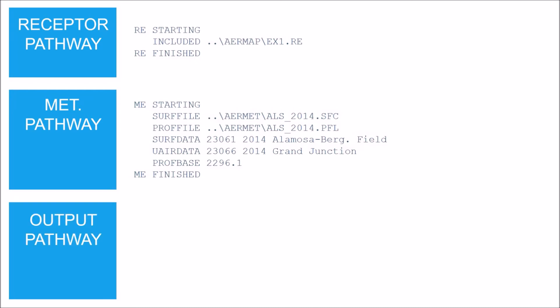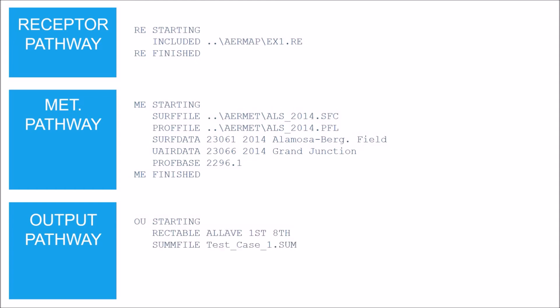The next pathway is the output pathway. The first line starts with the keyword STARTING. The RECTABLE keyword specifies the selection of high values by receptor for output. The MAXTABLE keyword specifies that you want the listed high values for all averaging periods being processed; then you list the high values you want in the output — we listed the first high and the eighth high. The SUMMFILE keyword specifies the summary file where you want to save a summary of the high ranked values.